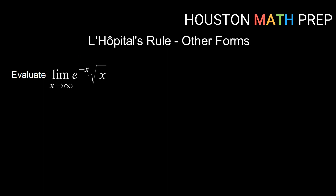If we start here with the limit as x goes to infinity of e to the negative x times the square root of x, thinking about e to the negative x as x goes to infinity, that goes to 0. And the square root of x goes off to infinity. So 0 times infinity is an indeterminate form, but it is not one of the two that L'Hôpital's rule covers.